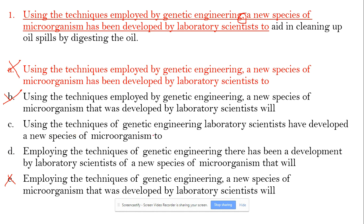Left with C and D. C says 'using the techniques of genetic engineering, laboratory scientists have developed a new species' — that's correct. D says 'employing the techniques of genetic engineering, there has been a development' — 'there has been a development' is an exaggeration of 'developed,' which is why it's called awkward. Awkward sentences are not accepted in GMAT, so D is out. C is the best choice.